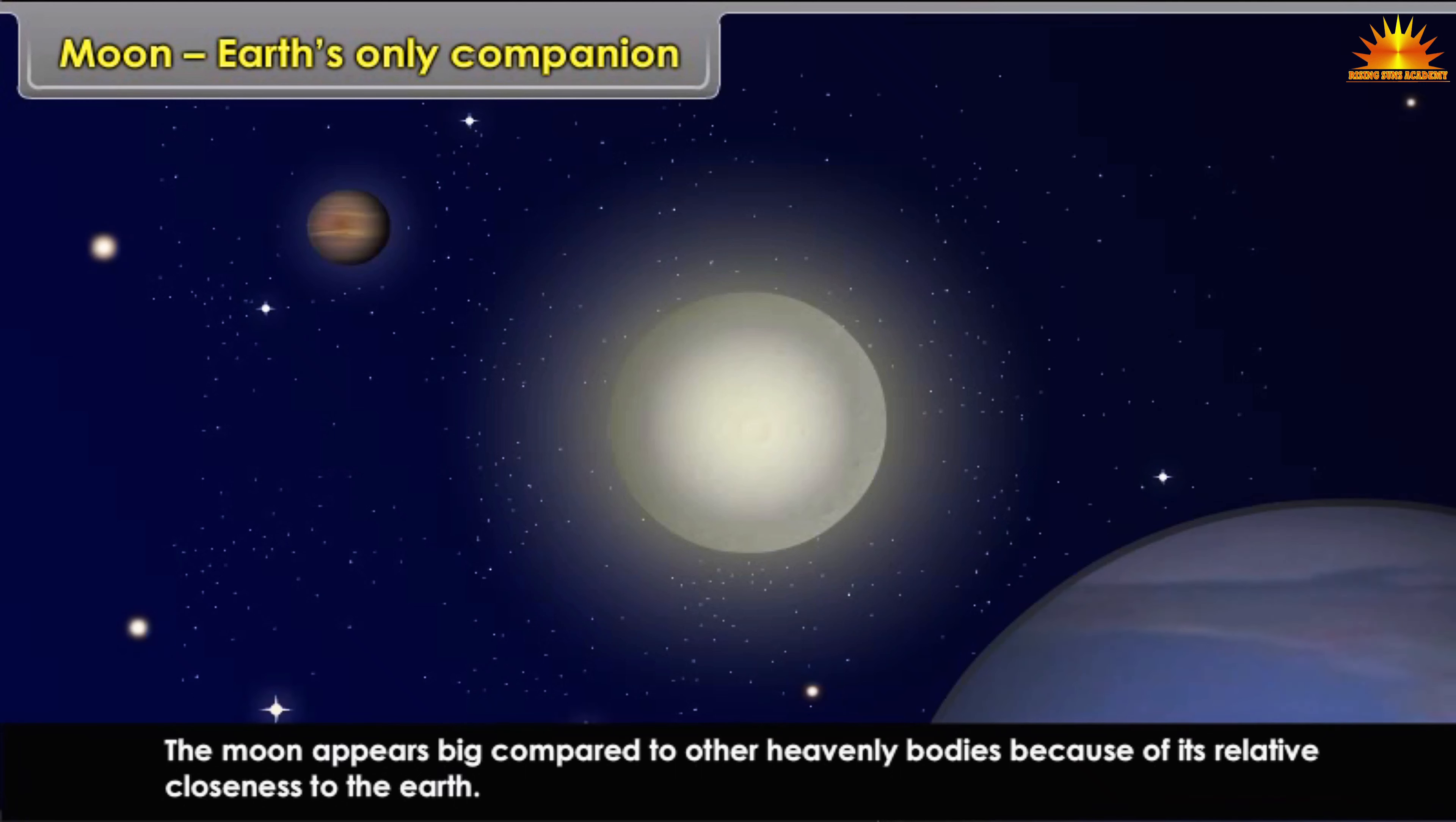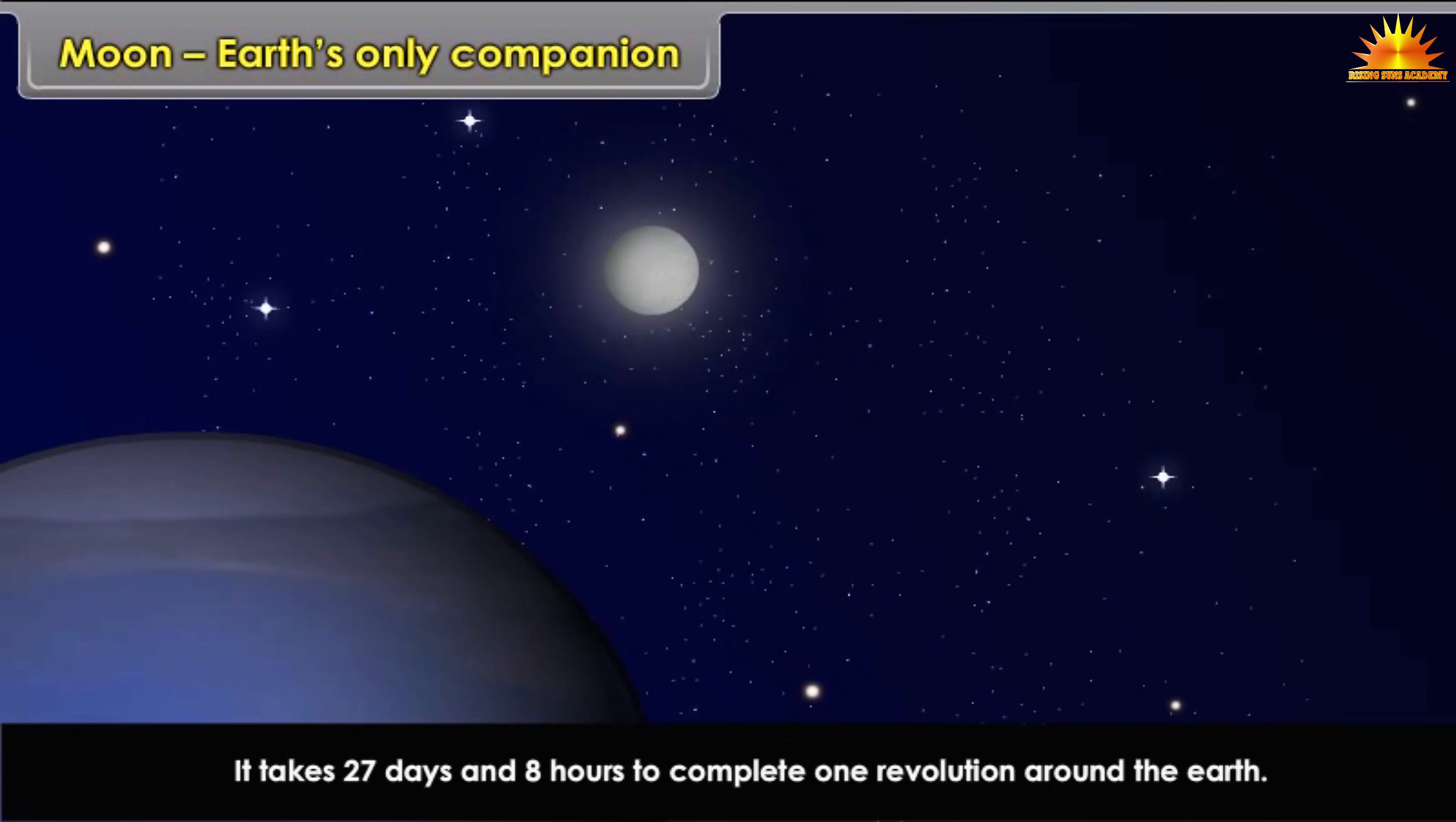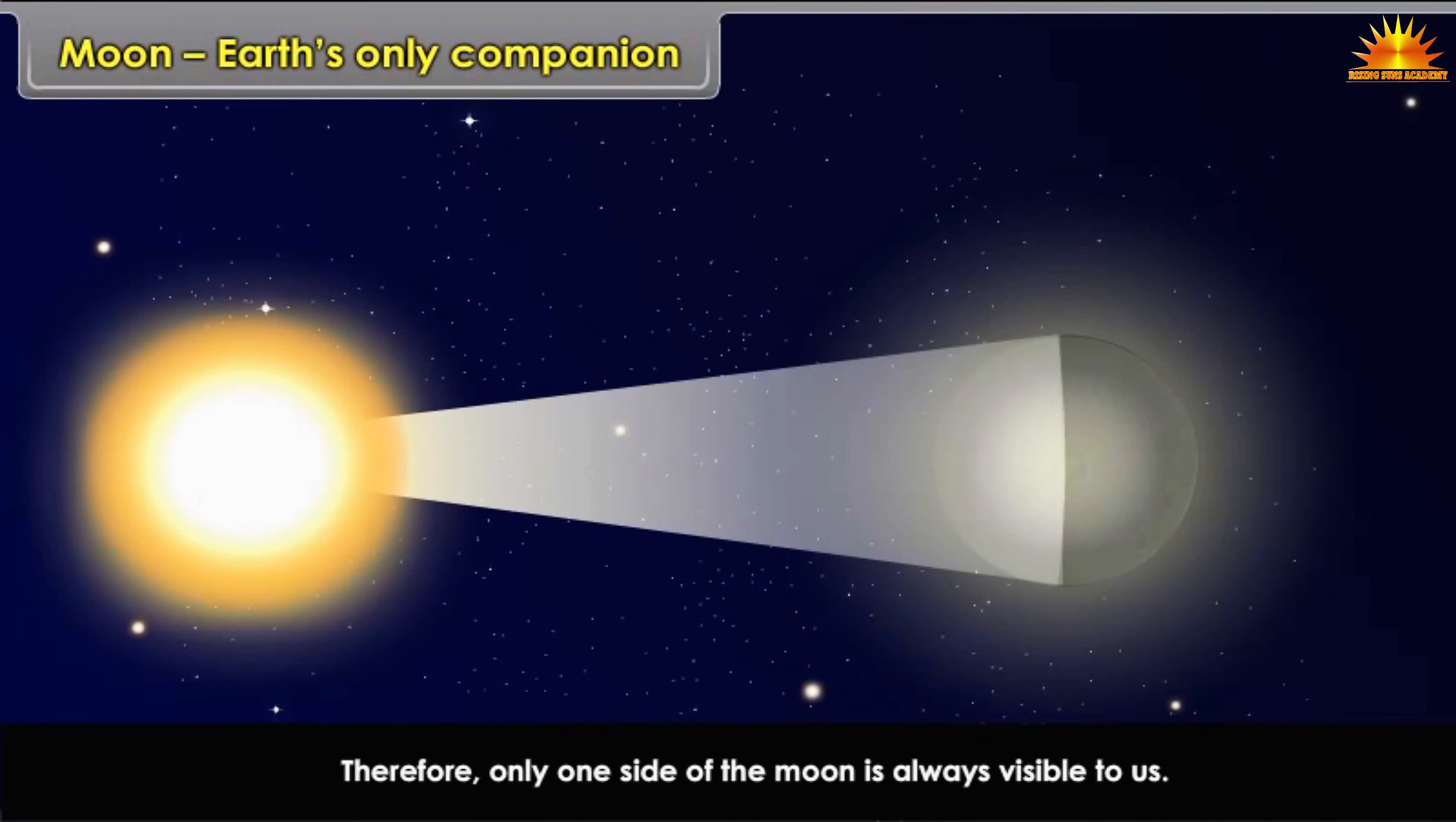The Moon reflects light from the Sun. The Moon rotates on an axis and revolves around the Earth. It takes 27 days and 8 hours to complete one revolution around the Earth. The time taken to complete one rotation is also the same. Therefore, only one side of the Moon is always visible to us.